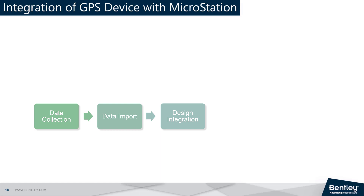Accurate positioning of data is important to perform various types of geographic analysis on the GPS data, such as terrain modeling, site planning, and land use analysis. This allows users to visualize and analyze the real-world conditions of a site and make informed decisions about design and development.